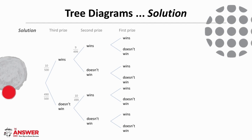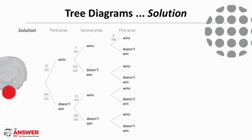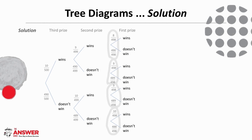In each of these cases we find the other branch's probability by knowing that the sum of these must be one. Then lastly for first prize, there are now 498 tickets left in total to select from. If Zia won third prize and second prize then she would have eight tickets left, so the probability would be 8 over 498. If she won third but not second prize then she would have nine tickets left. If she didn't win third prize but did win second prize then she would have nine tickets left, and if she didn't win either third or second prize she would still have 10 tickets left in the draw. We can now complete each of these branches' probabilities by making sure each pair adds up to one.